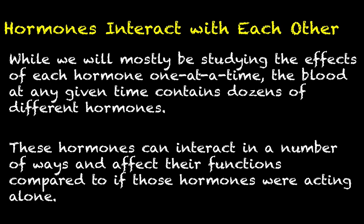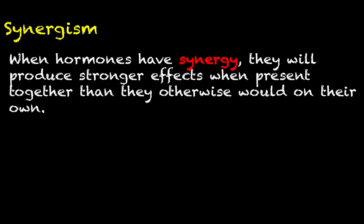The reality is that hormones present in the blood together can interact with each other in a number of different ways. What we want to do with this quick video is discuss the different ways in which one hormone can affect the function of another hormone or several other hormones. In the future, when we discuss particular hormones like glucagon, we'll understand that other hormones are acting in the background. There are three major ways in which hormones can interact with one another.